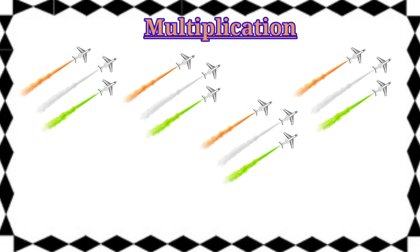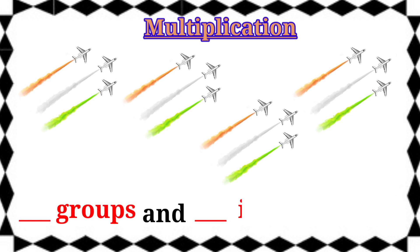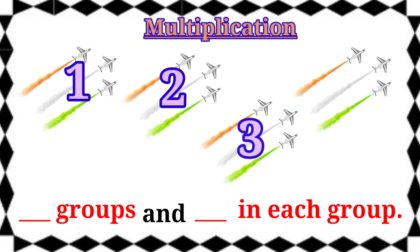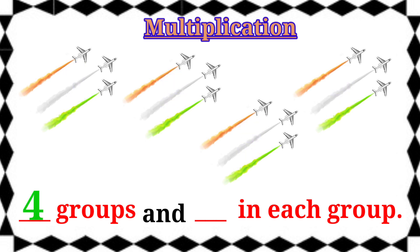The first question is: dash groups and dash in each group. Now we are going to count the groups first. 1, 2, 3, 4. Here 4 groups.